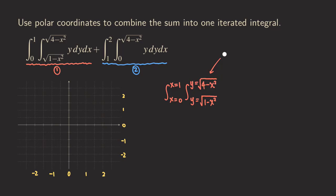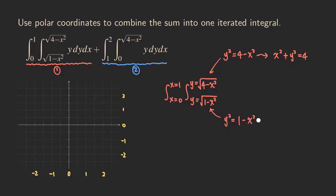If you don't see it, you can simply square both sides. You get Y squared equals four minus X squared, and if you move things around you can see that X squared plus Y squared equals four. The same thing happens for the other one: Y squared equals one minus X squared, which gives X squared plus Y squared equals one. So that is a circle of radius two, and that is a circle of radius one.